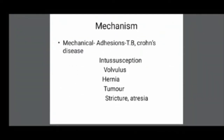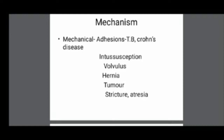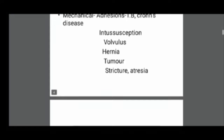In mechanical causes, obstruction occurs because of adhesions. The most common cause of adhesions in India is abdominal TB, where the walls of the intestines form adhesion bands. Other mechanical causes include Crohn's disease, intussusception, volvulus, any hernia in the abdomen, tumour, stricture formation, and atresia — where a portion of the intestine is not fully developed, resulting in atresia or stricture.